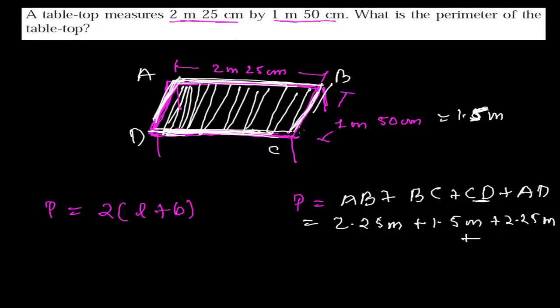And then AD and BC have the same length, so it is 1.5 meter again. So now this 2.25 and this 2.25 is 4.5 meter, and this 1.5 and 1.5 is 3 meter. And if I add 4.5 plus 3, it will be 7.5 meter. So this is our perimeter.